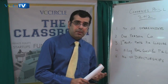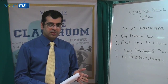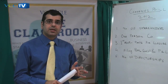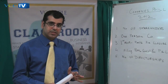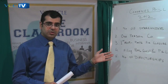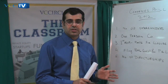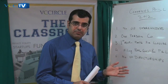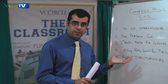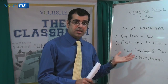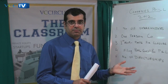Earlier, a person could be a director in as many private companies as he wanted, and could only be a director in 15 public limited companies. Now that has changed with the Companies Bill. The Companies Bill provides that a person can be a director in a maximum of 20 companies, out of which a maximum of 10 companies can be public limited. This threshold of 20 includes both public as well as private companies.